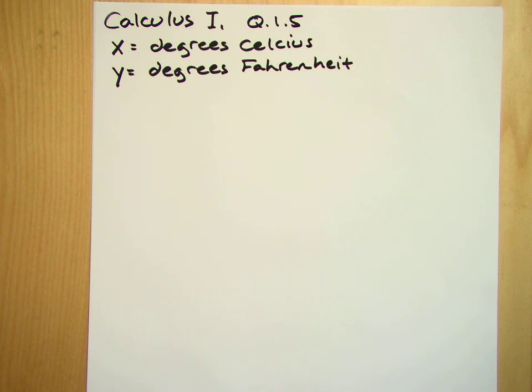Find the equation of the line that relates temperature Fahrenheit y to temperature Celsius x. Graph the line and find the y and x intercepts. What is the practical meaning of the intercepts?